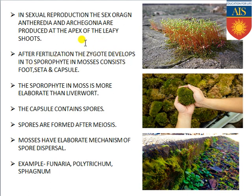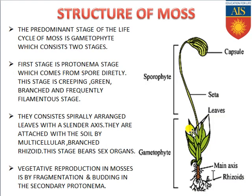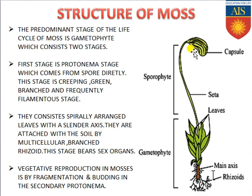After fertilization, the zygote develops because sperms are produced from androcytes in the antheridium, and ovum or egg is produced from the archegonium. When they fertilize, they form the zygote, which develops into the sporophyte stage consisting of foot, seta, and capsule. The foot remains concealed within the leaves; the seta is the stock-like structure; and the capsule contains spores.